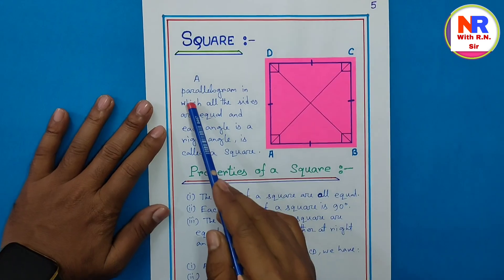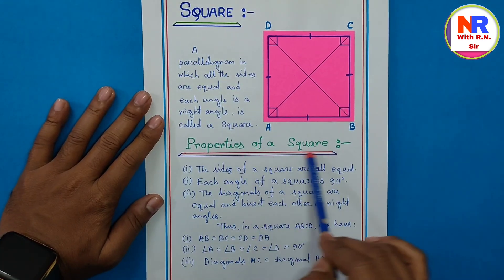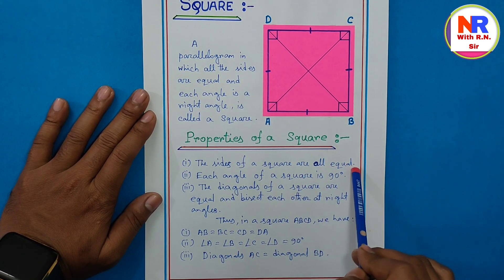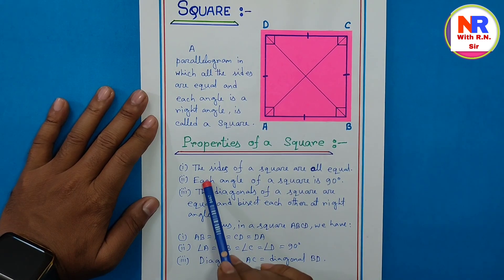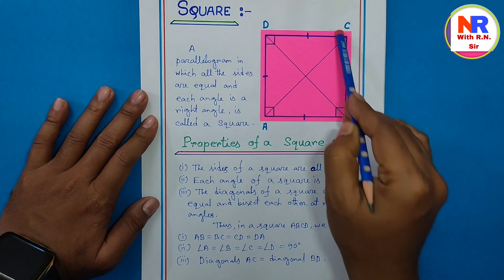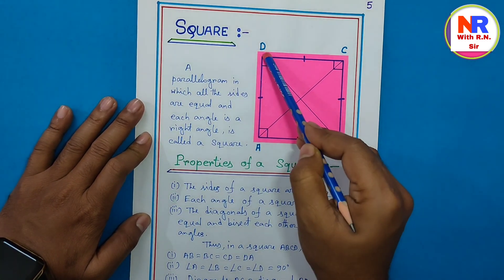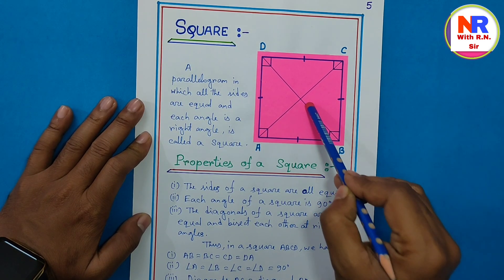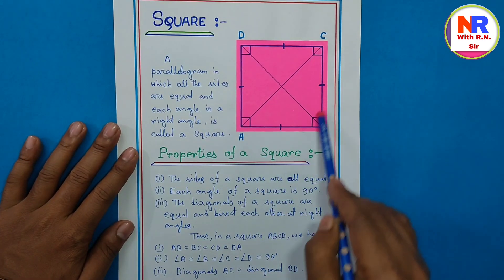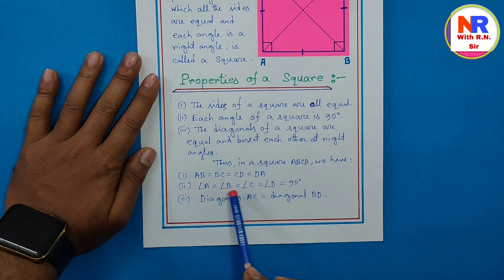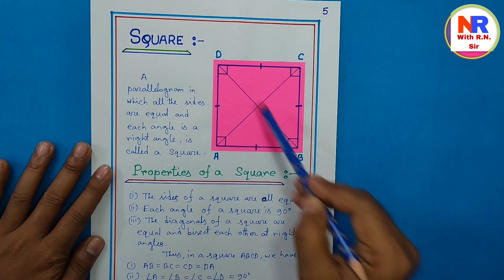Page number 5 — square. A parallelogram in which all sides are equal and each angle is a right angle is called a square. Properties: point 1 — all sides AB, BC, CD, and DA are equal. Point 2 — each angle is 90 degrees. Point 3 — the diagonals are equal and bisect each other at right angles, meaning AC = BD in length and all intersection angles are 90 degrees. Thus: AB = BC = CD = DA, all angles are 90 degrees, and diagonal AC = diagonal BD.